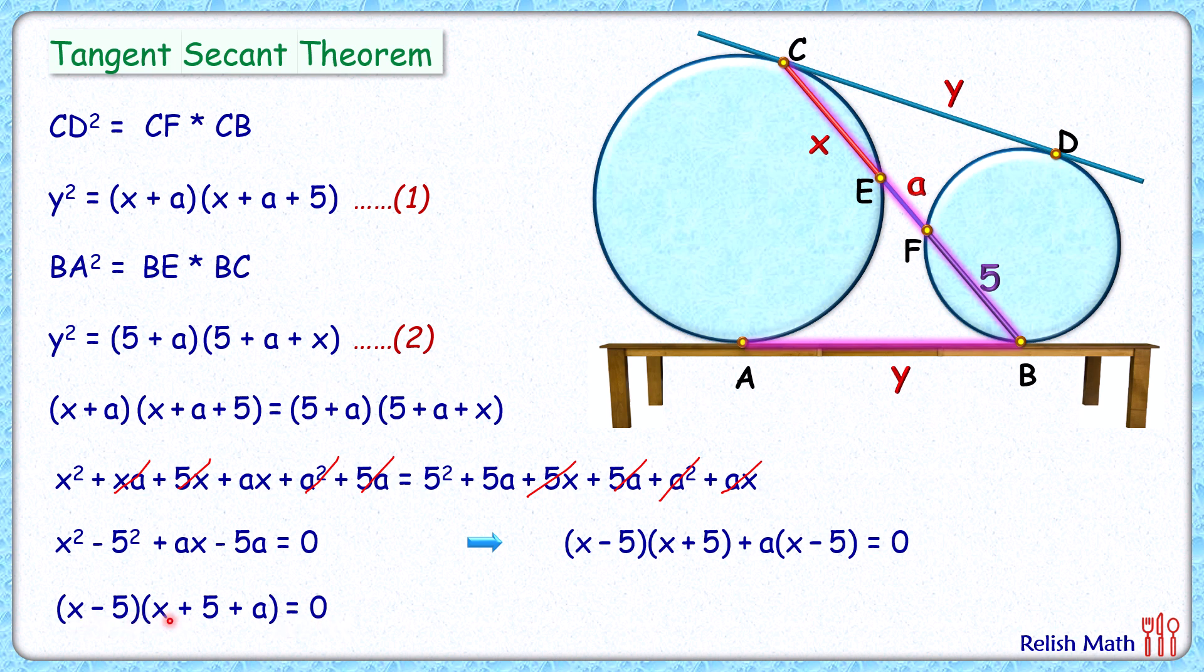Now here we are getting either x is 5 or x is negative 5 minus a. So ignoring the negative values of x, we'll get the value of x as 5 centimeters, and that's our answer. I hope you enjoyed the solution. I will see you in the next video. Till then, tata, bye bye!